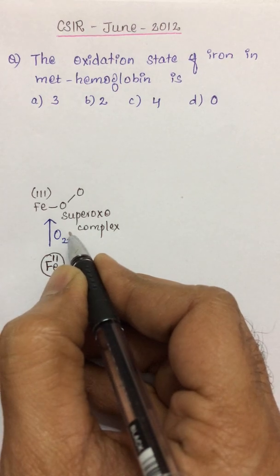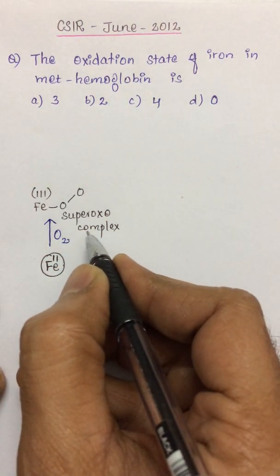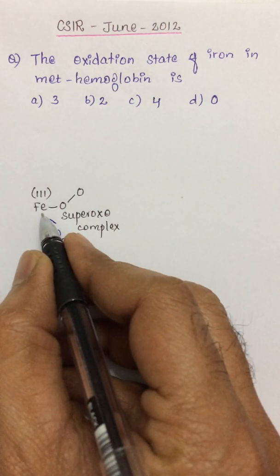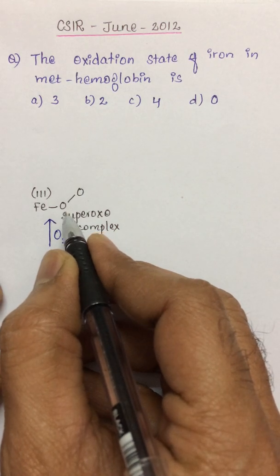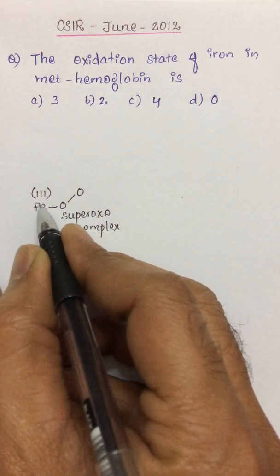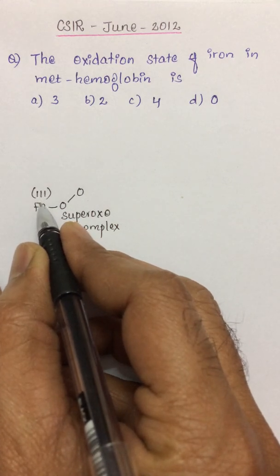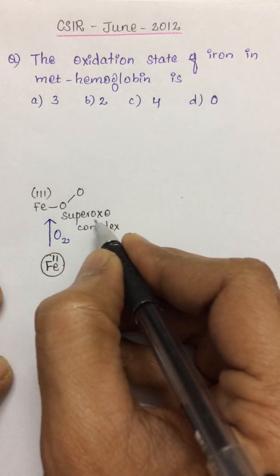Here anyway there is a controversy. There is a group of scientists who believe that the oxidation state of iron is +2 even when it is oxygenated. But there are some experimental evidences where the oxidation state of oxyhemoglobin is found to be +3, so we are going by +3. We call it a superoxo complex.